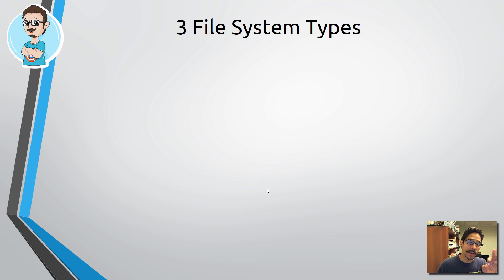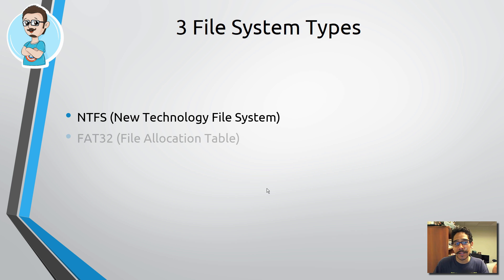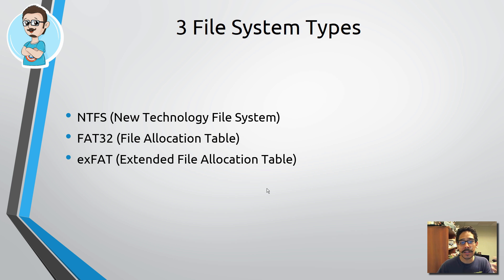Now again, there are three file system types. One is NTFS, which is the New Technology File System; FAT32, which is the File Allocation Table; and exFAT, which is a newer model of FAT32 — the Extended File Allocation Table.